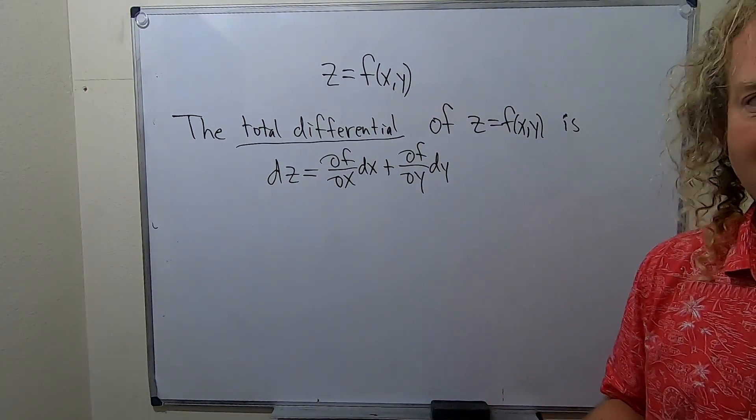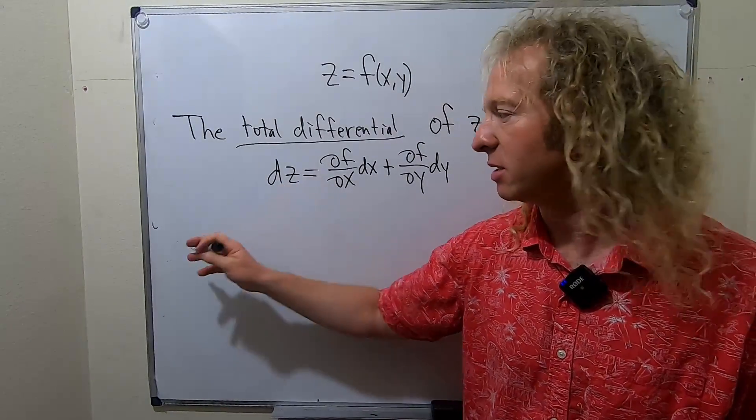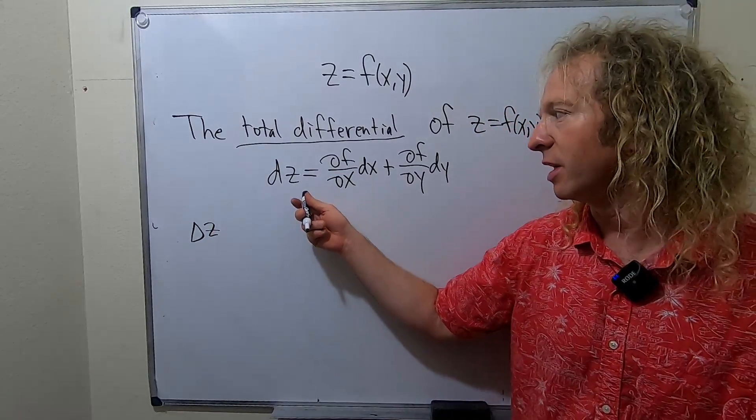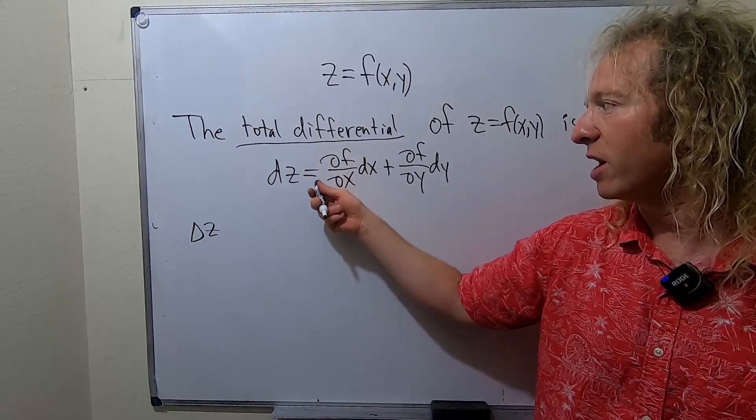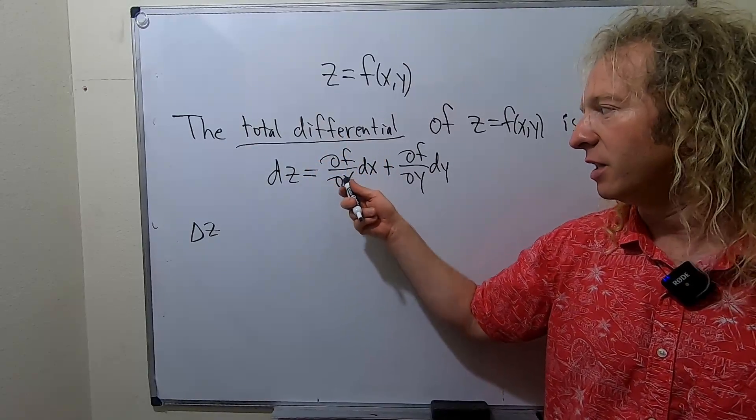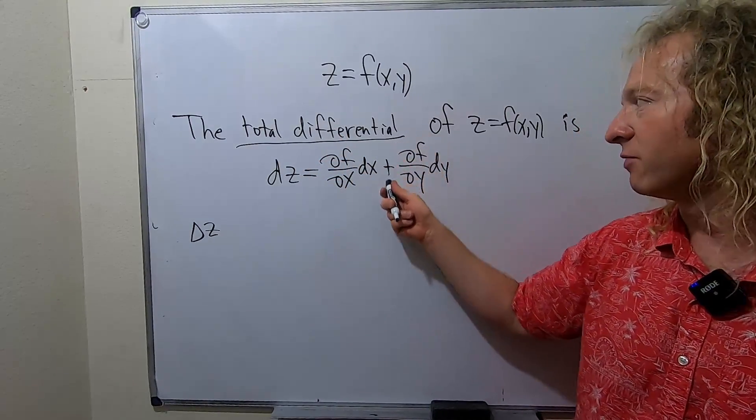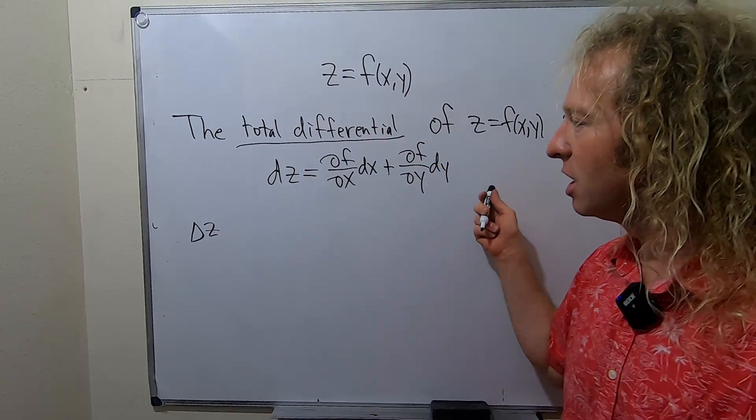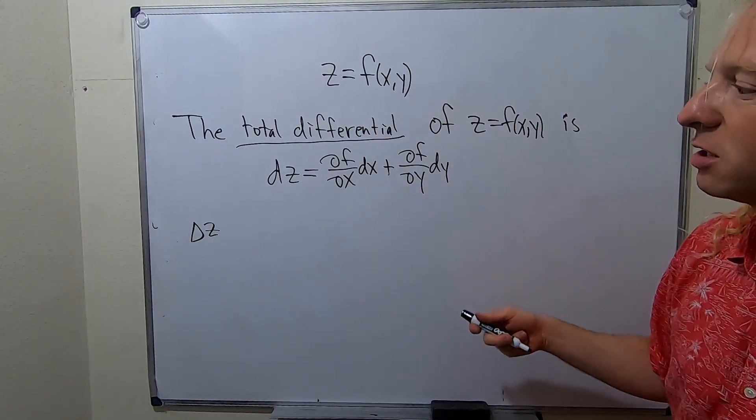If you study approximations, you can use it. Here's how: dz actually approximates delta z, which is the change in z. What you can do is say the approximation to the change in z equals the rate of change in the x direction times a small change in the x direction, plus the rate of change in the y direction times a small change in the y direction, equals a small change in the z direction.